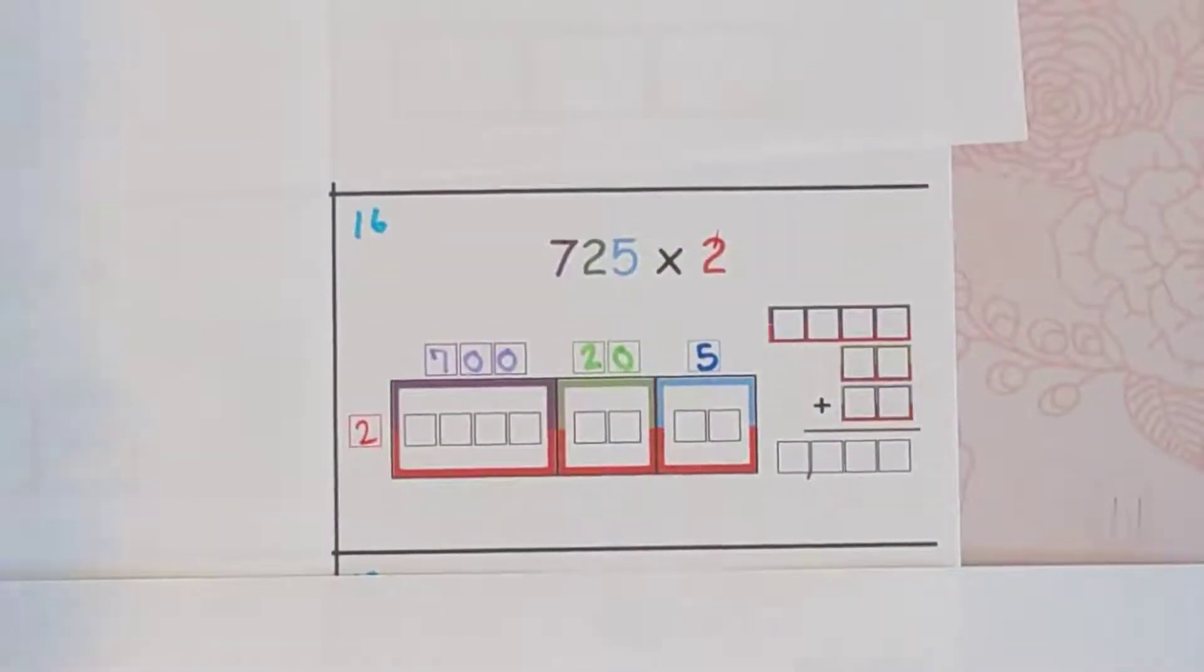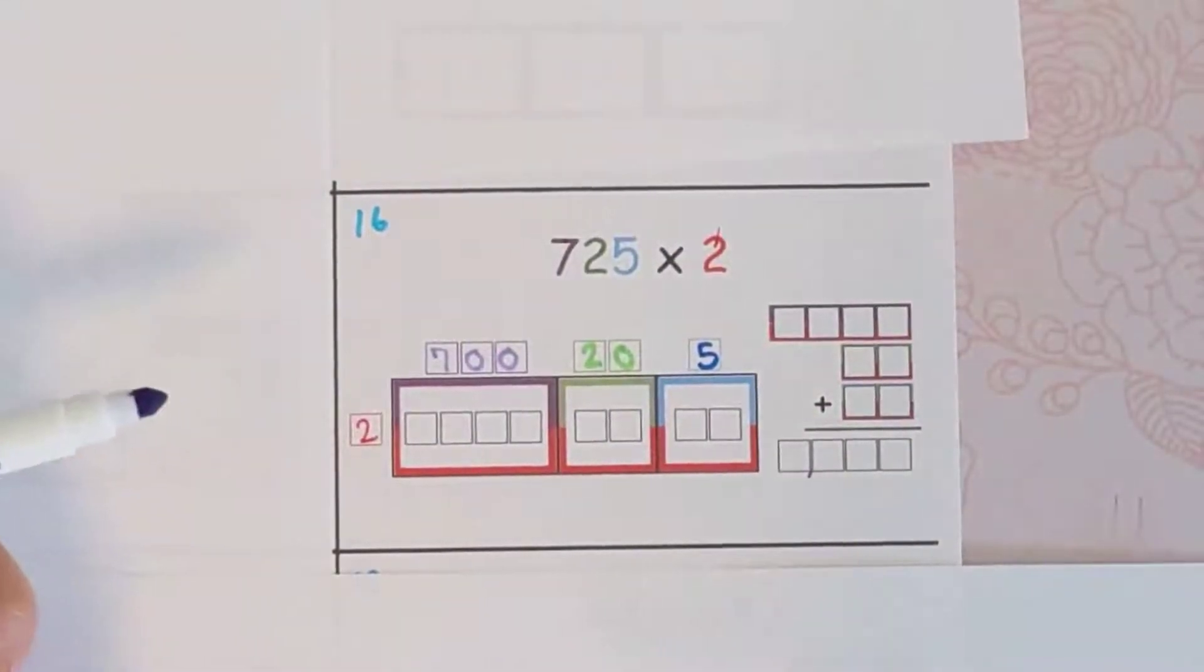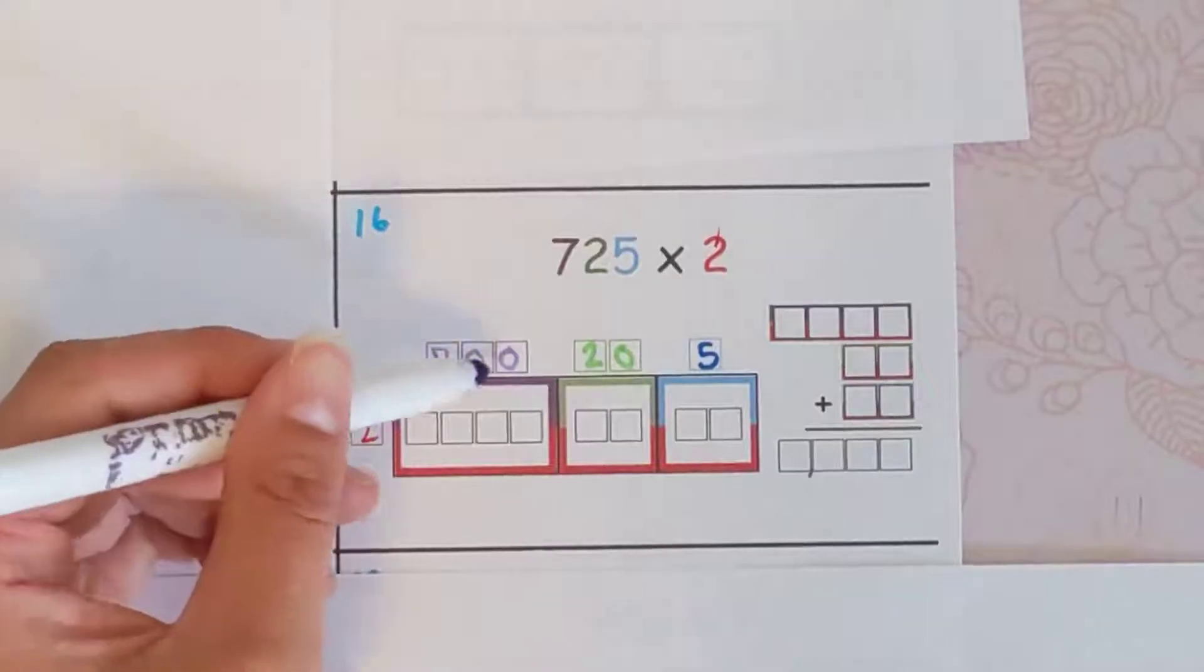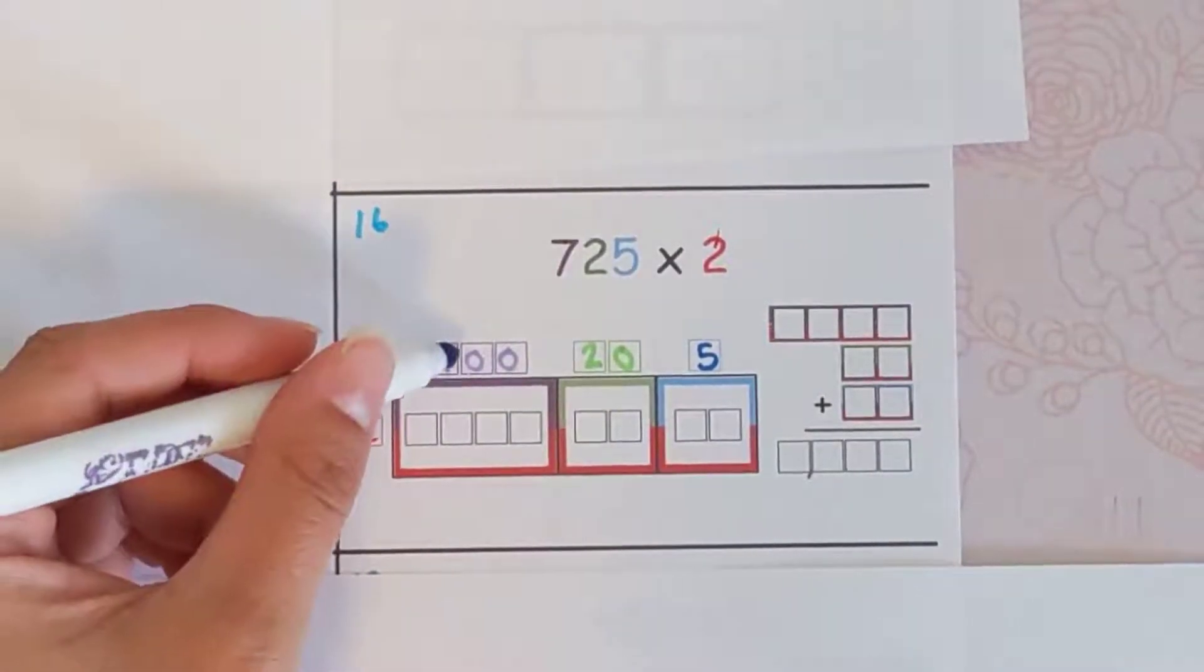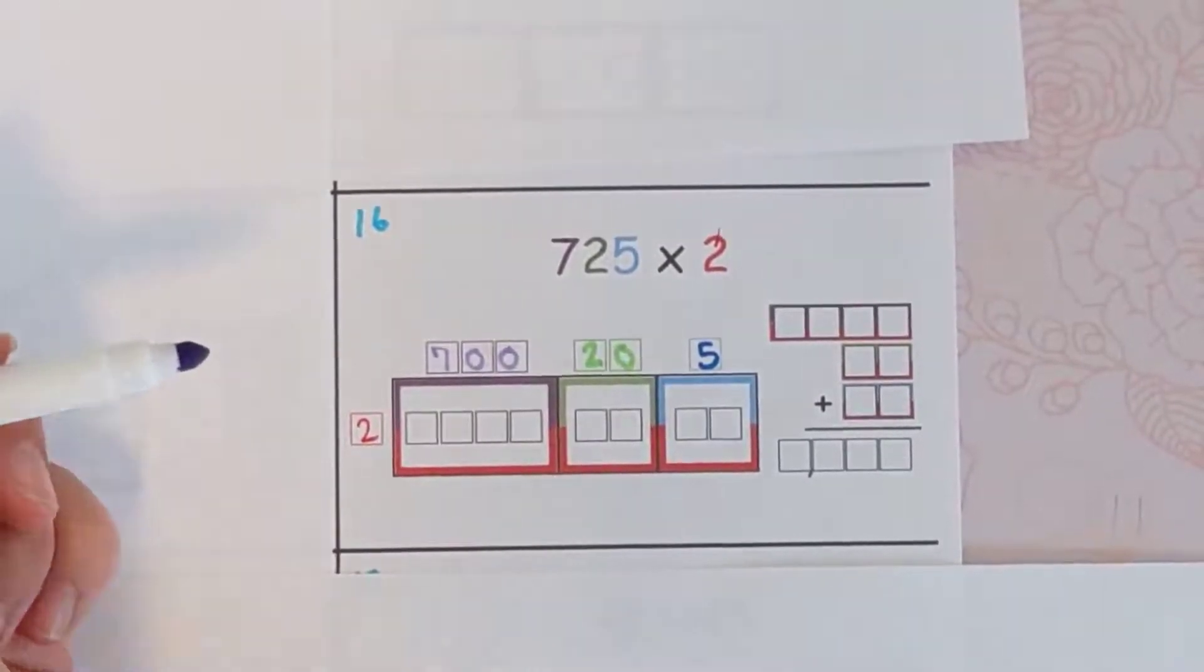And if you get stuck, you can use the colors to help you. Just remember that when you're multiplying things that have zeros, like 700, you can forget about the zeros, pretend they're not there, and just put them back in at the end.